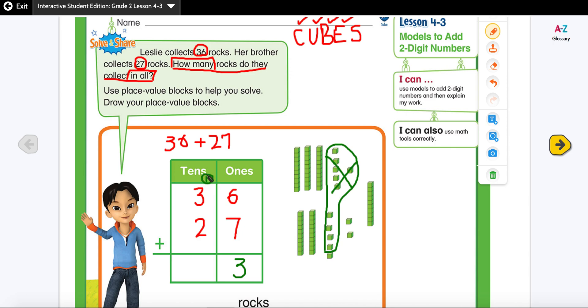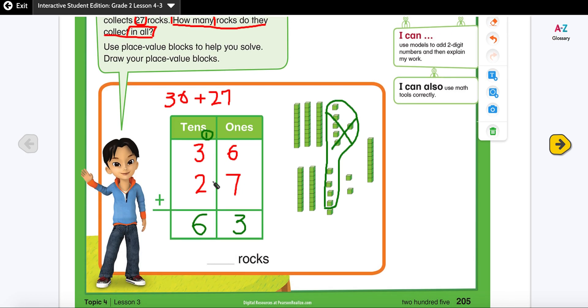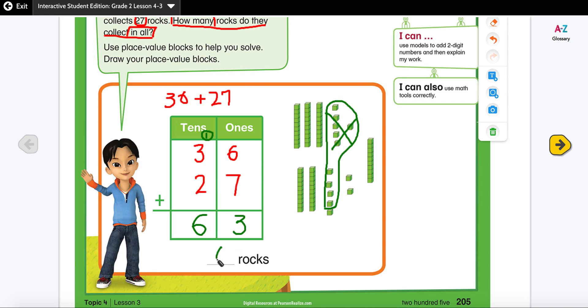Now I am going to add my tens together. One, two, three, four, five, six tens. And I can also check my work here with the standard algorithm method. I will add the tens: 3 plus 2 is 5, and the one that we regrouped will make it 6. So our answer is 63 rocks.